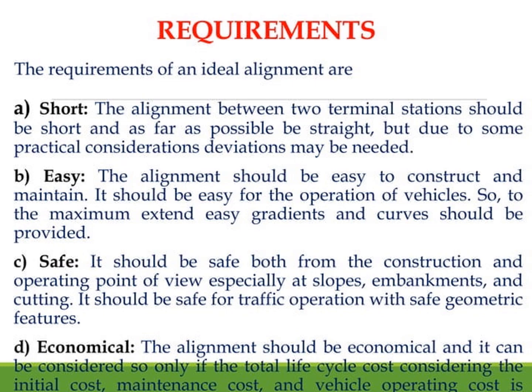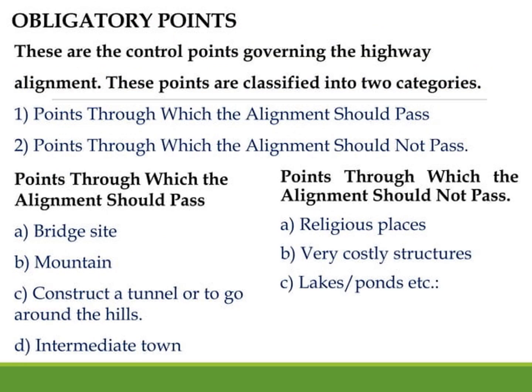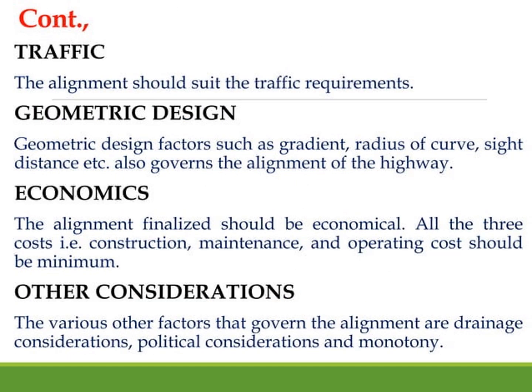The basic points considered in alignment are: obligatory points, traffic, geometric design, economics, and other considerations. Obligatory points include bridge sites, mountains, tunnels, intermediate towns, religious sites, very costly structures, and lakes — points the road should not pass through. The road should pass through bridge sites and mountains, but due to certain criteria we can make adjustments.